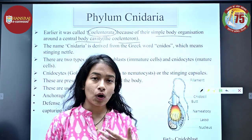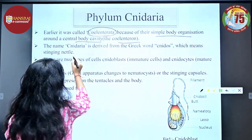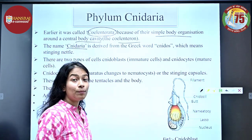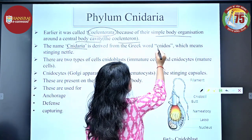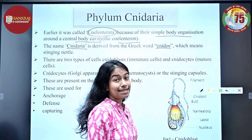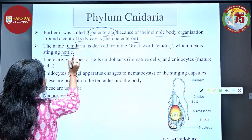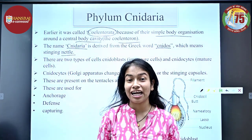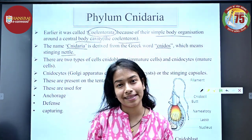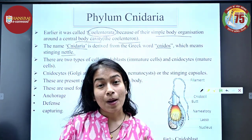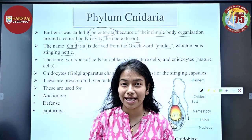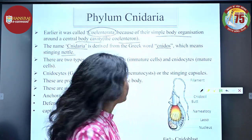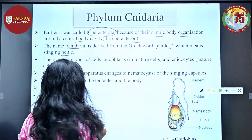Why is it called Phylum Cnidaria? The word Cnidaria is derived from the Greek word 'Knidos' which means nettle — a herbaceous plant which is covered with stings. So actually, the members of Phylum Cnidaria have stinging cells called cnidocytes.